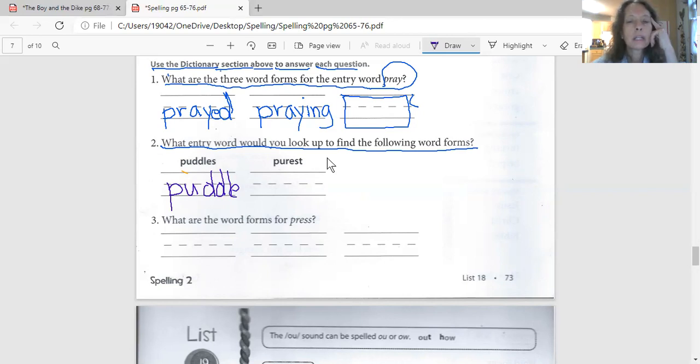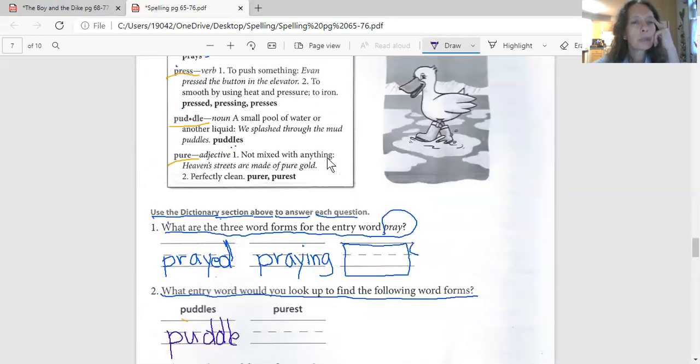And now find the word purest, and I'm going to have you do the next one on your own. Purest. There it is. There it is. Entry word. There it is right there. I'm giving you a clue. There's a clue. That word goes down here. That's the word that goes in there.